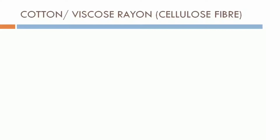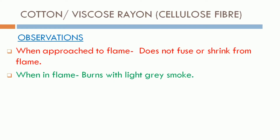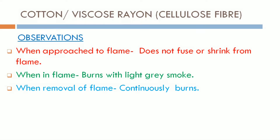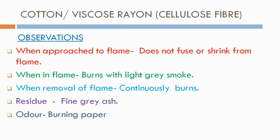Let's begin the burn test with cellulosic fibers — that is cotton, viscose rayon, etc. Observations: we need to observe the following points while burning these fibers. When approached to flame, it ignites readily. When in flame, it burns with light gray smoke. When removed from flame, it continues to burn. The residue is fine gray ash and the odor is like burning paper.